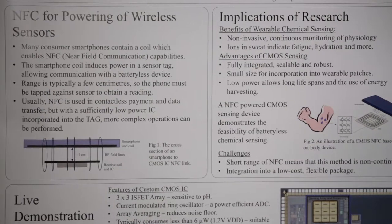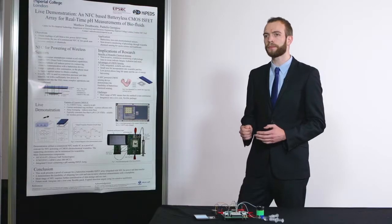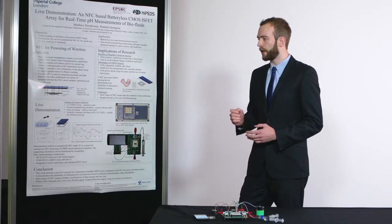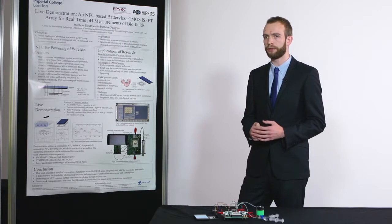The innovation that we've gone for here is developing a very low power CMOS microchip containing chemical sensors, which are ion-sensitive transistors known as ISFETs. These sensors are fully integrated in the device, and the whole chip consumes less than 10 microwatts. As a result, we're able to power the device through energy harvesting sources, and in this case we're demonstrating wireless powering through NFC.